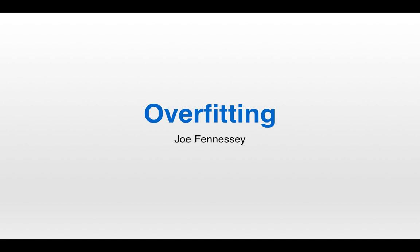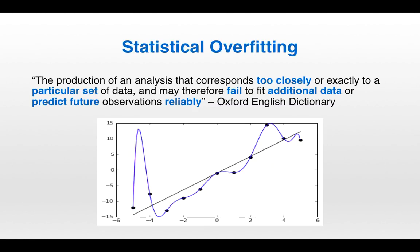It's Joe, and this is the fifth installment in the Quant Trading in Futures video series. Today we'll be discussing overfitting. We're going to begin with a statistical definition of overfitting. Here's one from the Oxford English Dictionary: overfitting is the production of an analysis that corresponds too closely or exactly to a particular set of data and may therefore fail to fit additional data or predict future observations reliably.